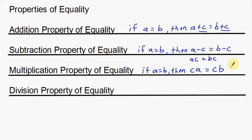For the division property of equality, again using my conditional if-then statement: if A is equal to B, then A over C — A divided by C is equal to B divided by C. Notice that C is that thing I've been using the entire time — the thing I'm either adding, subtracting, multiplying, or dividing on each side. Now there is one special rule I have to go over with the division property: C cannot equal zero.